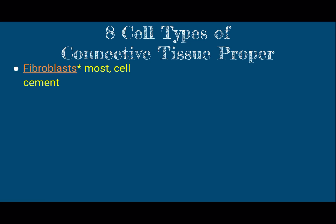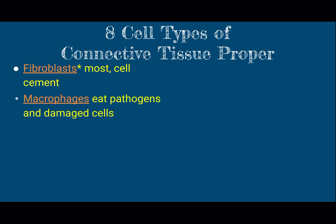Let's talk about the eight cell types in connective tissue proper. Fibroblasts — these are very common, the most common — and they are used as a cellular cement to hold things together. Then we have macrophages; these are cleanup cells that eat up pathogens. Adipocytes — we talked about those a little while ago.